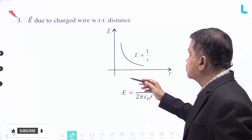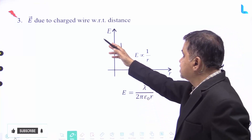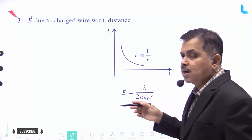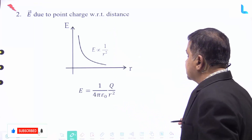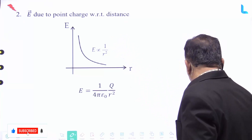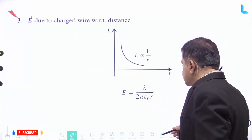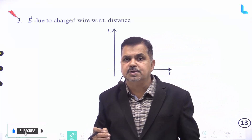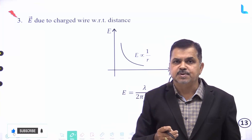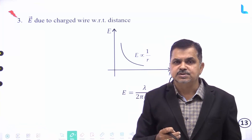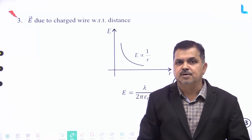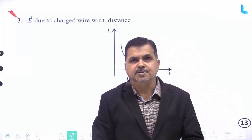We have seen a number of graphs represented with respect to the electric field and distance, Coulomb's Law, and the electric field due to a point charge with respect to distance. We have covered important points, definitions, and concepts related to the chapter on Electric Charges and Fields. This completes the last-minute revision on this chapter. Thank you.